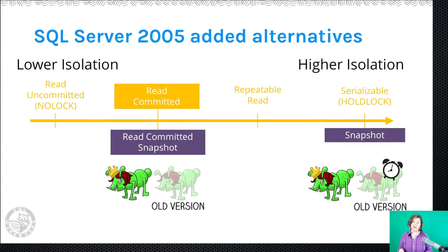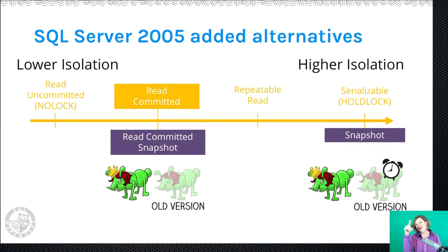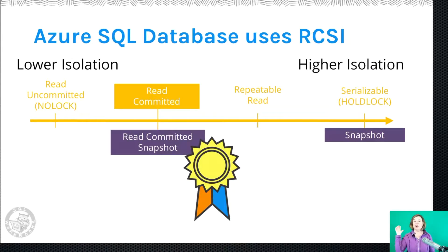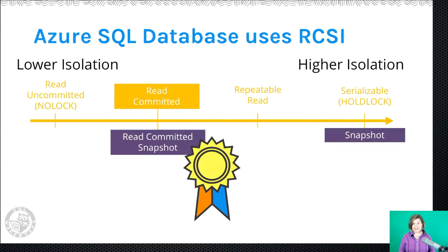Snapshot isolation is very similar but provides higher isolation, showing data consistent with when the transaction first started — not just each statement. This is really great for something like a report for your CTO that contains lots of sensitive information where multiple queries are run serially. You want them all to be consistent so the numbers add up across different sections of the report. These are so exciting and useful that Azure SQL Database uses Read Committed Snapshot as its default isolation level rather than plain Read Committed.